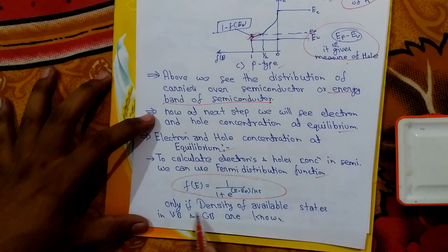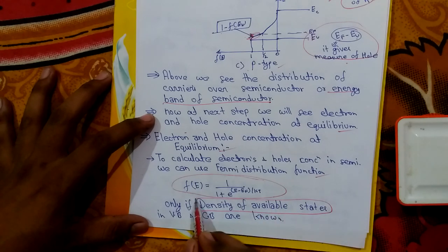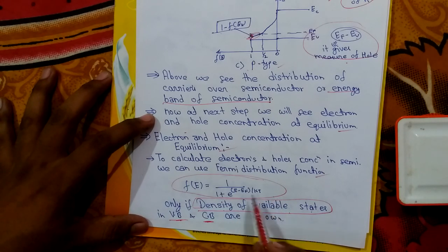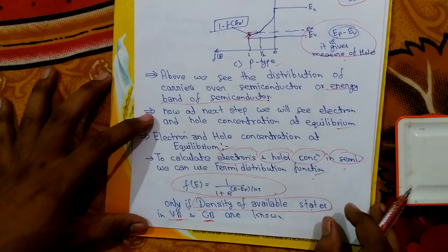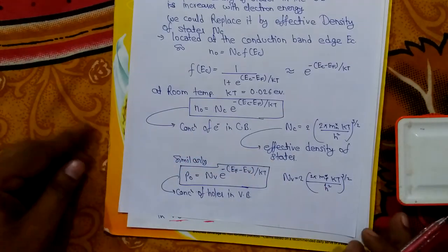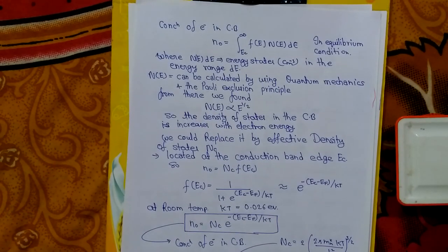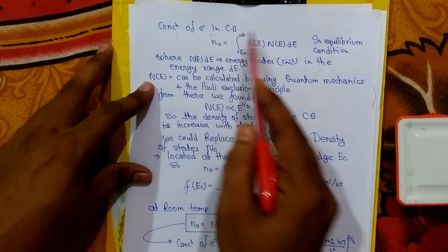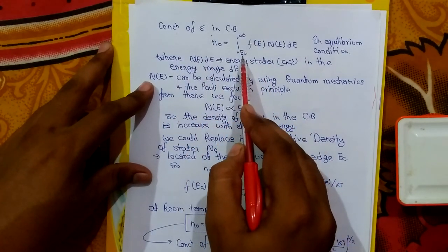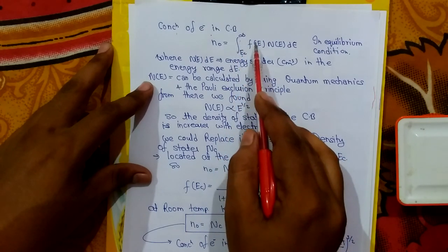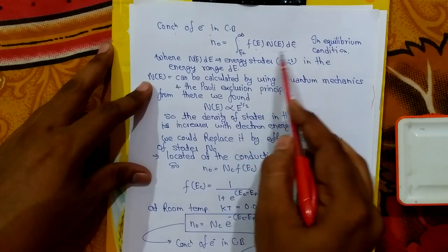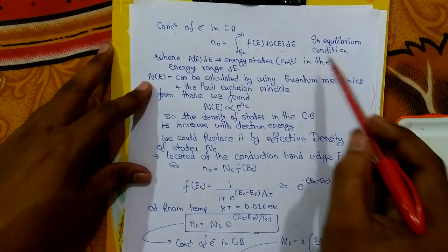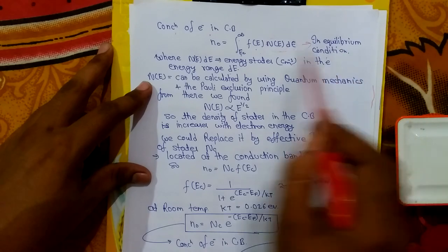To do this, we need to know the density of available states in the valence band as well as in the conduction band. Only if we know the density of states in both bands can we use the Fermi distribution function to calculate the electron and hole concentration. The concentration of electrons in the conduction band n₀ is the integral from EC to infinity of the Fermi distribution function times the density of energy states dE, evaluated in equilibrium.